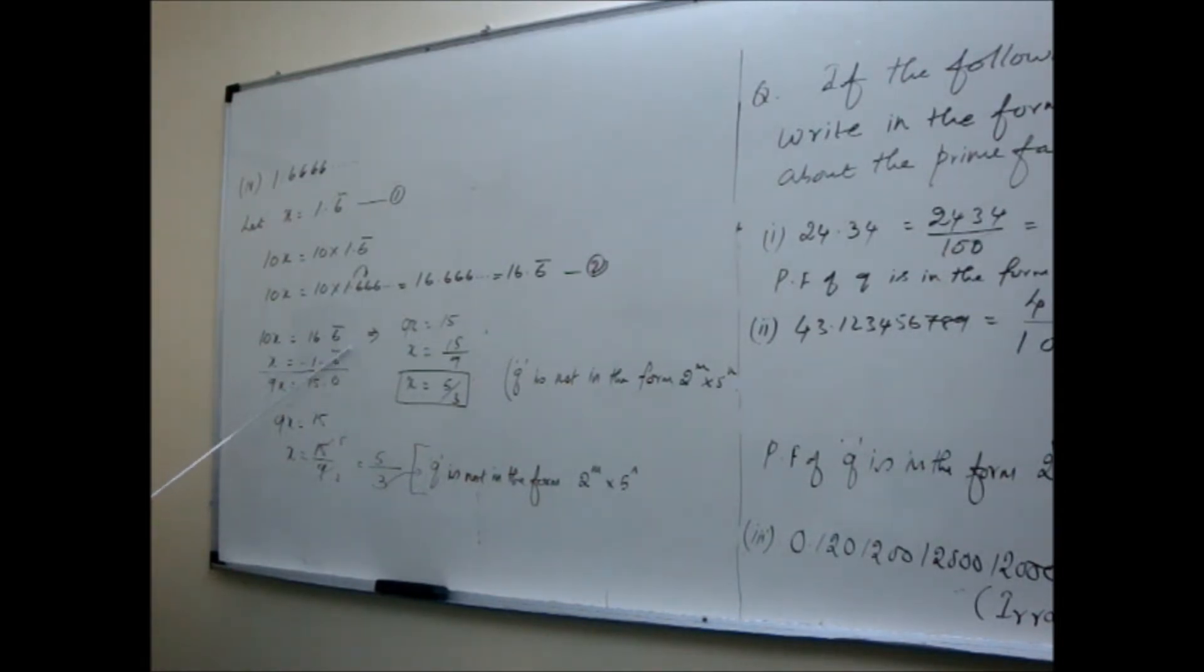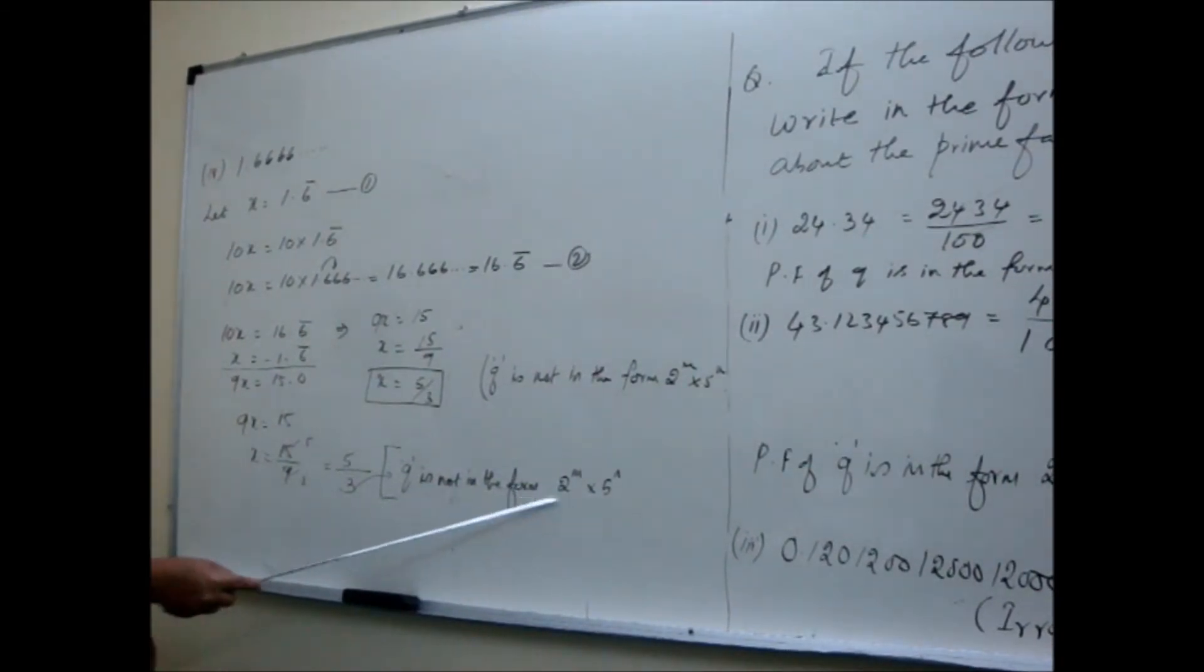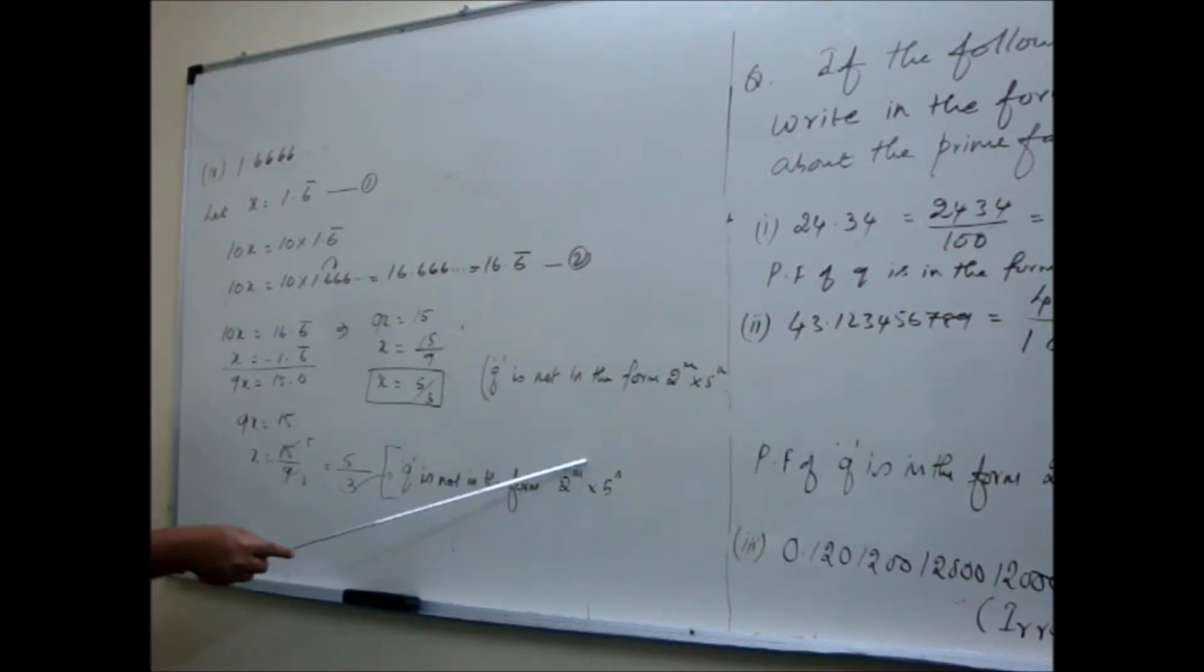Mark it as 2, this one mark it as 1. Then you subtract from second equation, subtract the first equation. Means 10X is equal to 16.6 bar, X is equal to 1.6 bar. These two we arrange in order to subtract. So we need to make these two repeating digits should come in the same column, so while subtracting it gets eliminated. So 9X here. 10X minus X is 9X. 9X is equal to 15. So 9X is equal to 15, means what is X? 15 by 9. Simplest form 5 by 3.